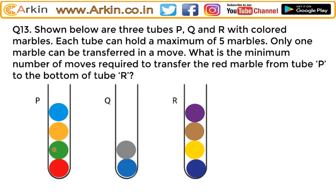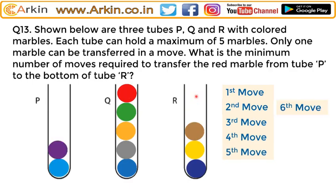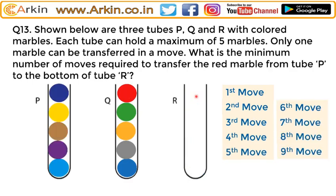First, in three moves, remove the three marbles above. The fourth move brings the red marble up so that tube R is now accessible. In moves five through nine, the blocking marbles are moved so the tube is empty at the bottom. On the tenth move, the red marble goes to the bottom of tube R. So the minimum number of moves required is 10.